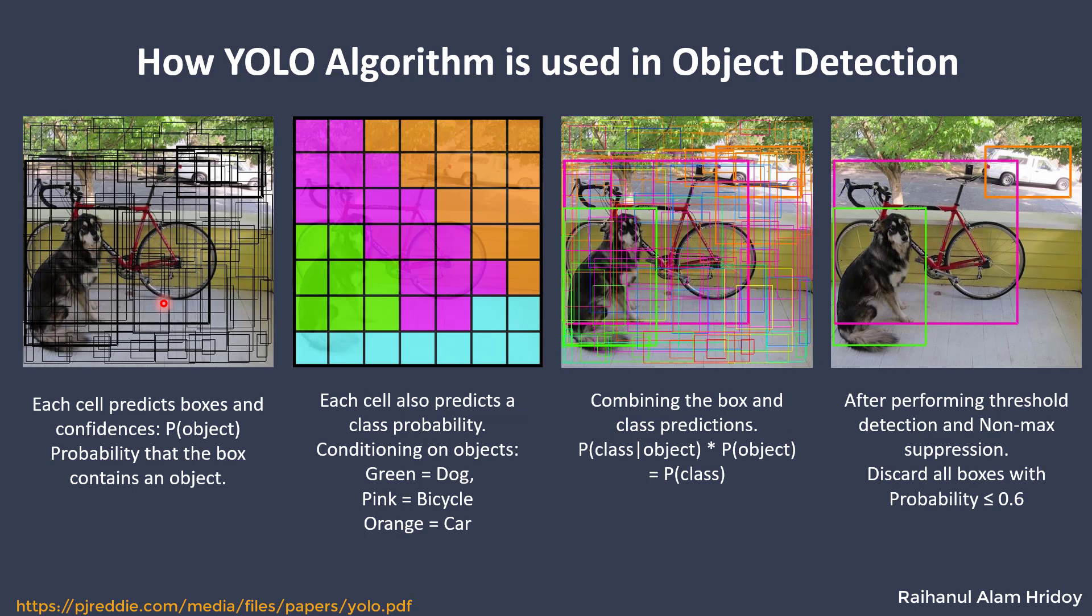Now each cell predicts the box and puts a probability value in it. Here we used different colors to show different classes of objects in the grid. This image shows all the boxes that identified an object. Now we can see that multiple boxes are around a single object. You can see from here that this green box has identified it. There's another green box. There are multiple boxes around a single object.